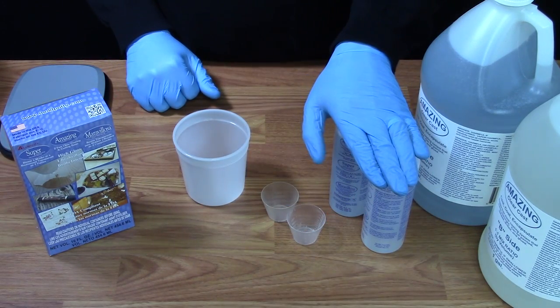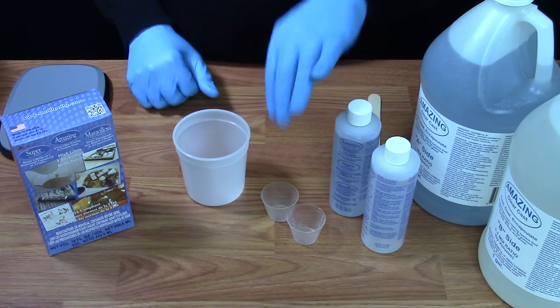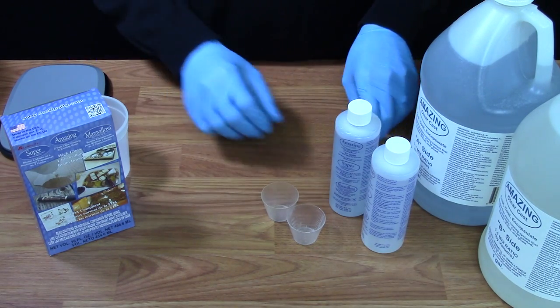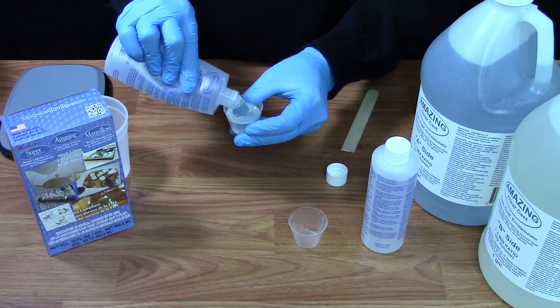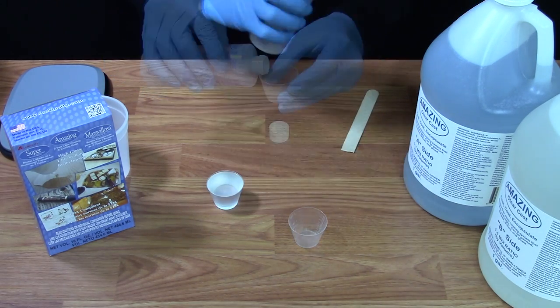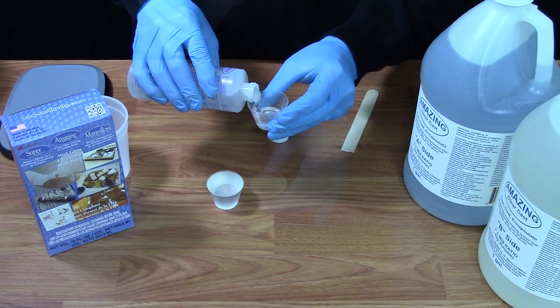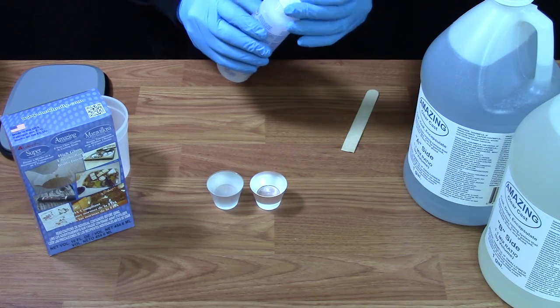When using our smaller kit, our 16-ounce kit, we do provide two small measuring cups for you to measure each side out. Slowly measure out each side until you have equal amounts.